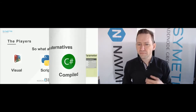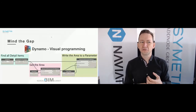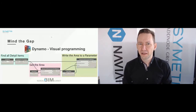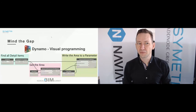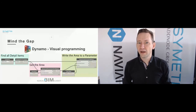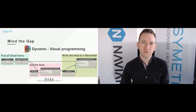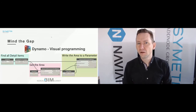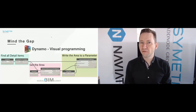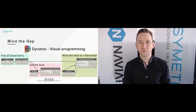What does Dynamo look like? If you've never seen it, this is a very simple Dynamo script — but it solves an issue I had at a customer just last week: how do you get the area from a filled region into another parameter? You can't, even in Revit 2022. But with a simple Dynamo script, you can fix that. You can put this together in a few minutes, and the next week you might even understand how you did it.